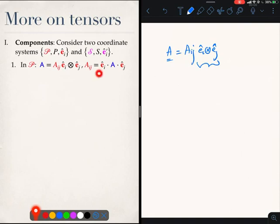The components aij in P are given by this formula. These aij are the components of the tensor A in P.